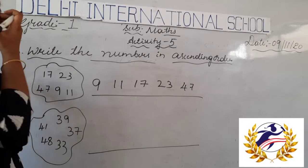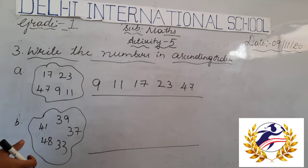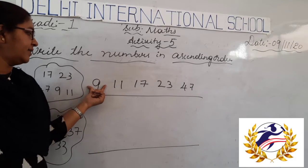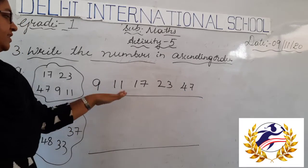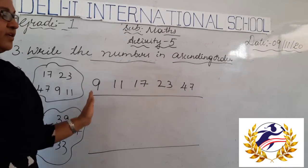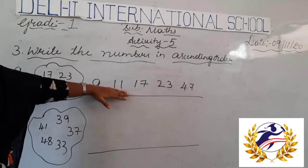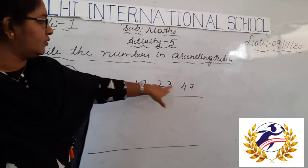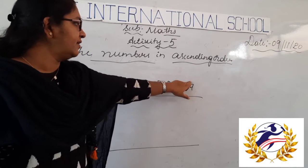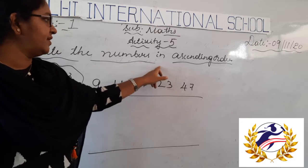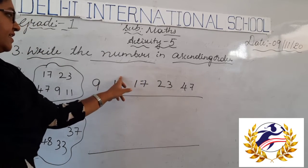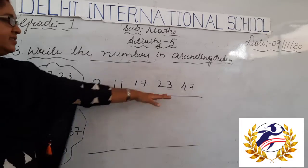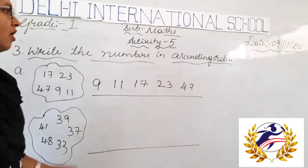Next comes 23, then 47. While arranging numbers in order, we have to look at the digit at the tens place. If single digit, the greatest is 9. For two-digit numbers, we compare the tens place digit — here they are 1, 1, 2, 4. So 47 is the greatest. 23 is less than 47, 17 is less than 23, 11 is less than 17, and 9 is less than 11. We have arranged these numbers in ascending order.